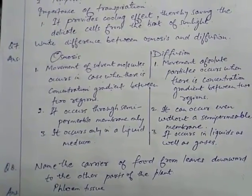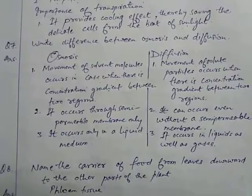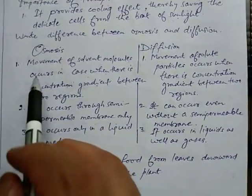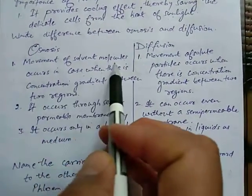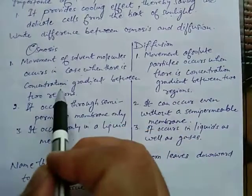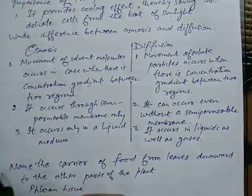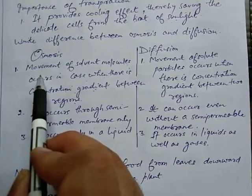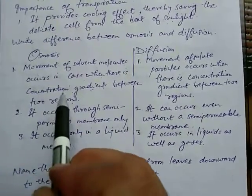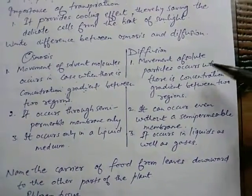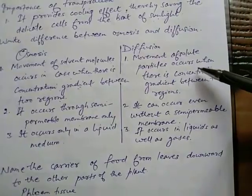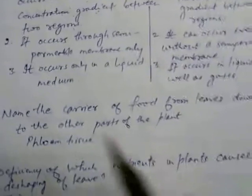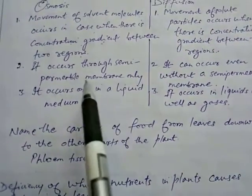Question 7, important question: Distinguish between osmosis and diffusion. In osmosis, movement of solvent molecules occurs when there is concentration gradient between two regions, from a region where they are more in number to a region where they are less in number. In diffusion, movement of solute particles occurs when there is concentration gradient between two regions.